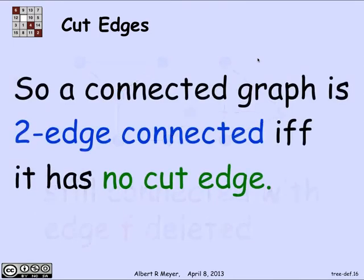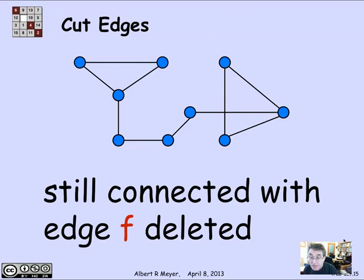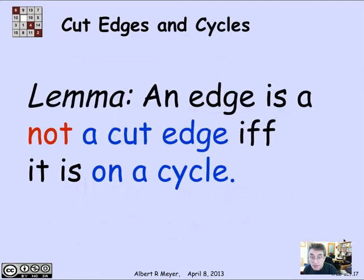It's still connected after you delete it. So now we get a simple way to characterize trees in terms of cut edges because an edge is not a cut edge if and only if it's on a cycle. If you think about that, if it's on a cycle and you cut an edge out of a cycle, then everything on the cycle is still connected by going the other way around the cycle that doesn't use that edge.